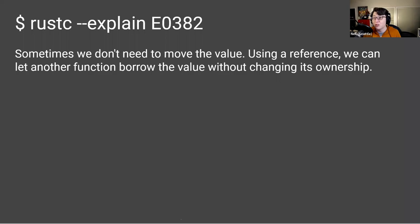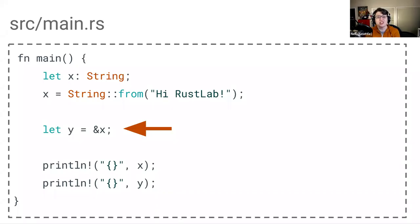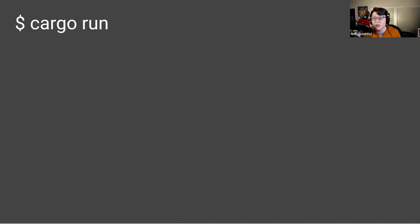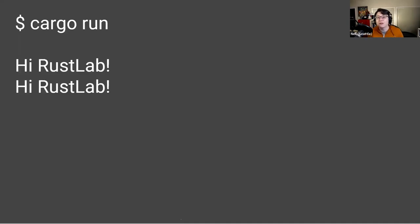So let's integrate this into our Rust code. Let's change this line so that y is assigned to a reference to the value of x — that's what the ampersand before x means — rather than moving the value of x into y. We are referencing the value; we're not moving it. If I make this change and then run my code using cargo run, once the compiler builds and executes it, I will see the message 'hi RustLab' printed out twice. So rather than fighting the Rust borrow checker, we used it to make our code even better.